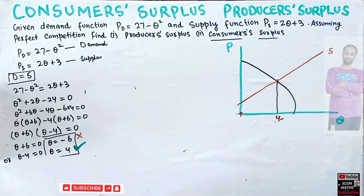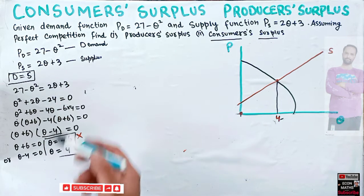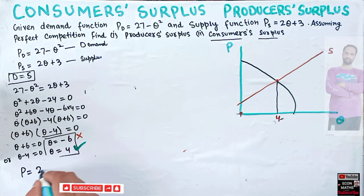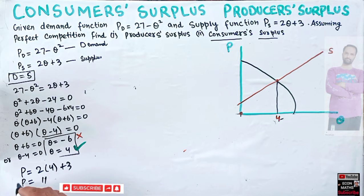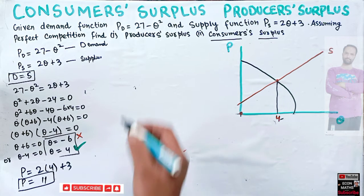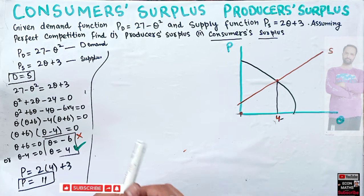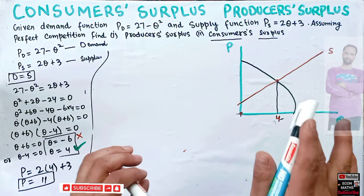Now we find the equilibrium price by plugging Q equals 4 into the supply function: P equals 2 times 4 plus 3 equals 8 plus 3 equals 11. So the equilibrium price is 11 and equilibrium quantity is 4.